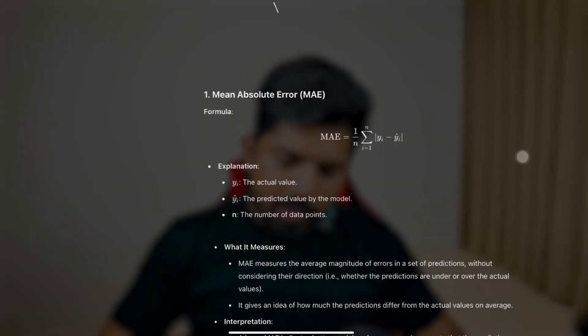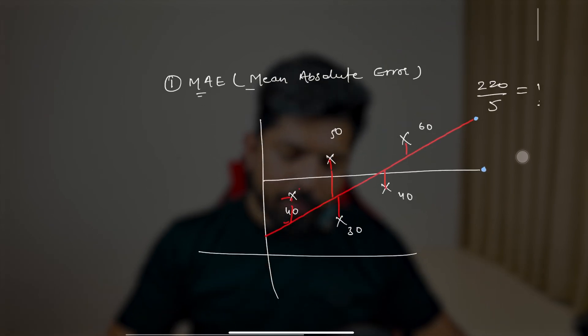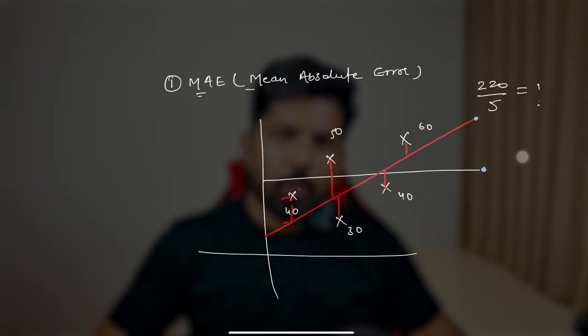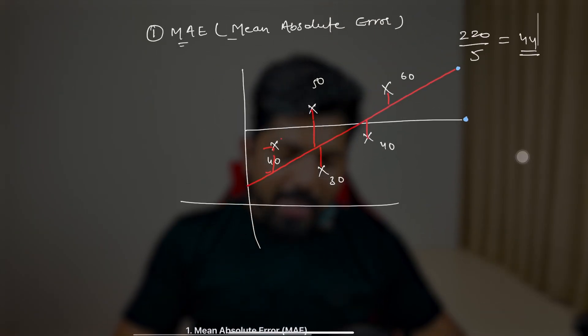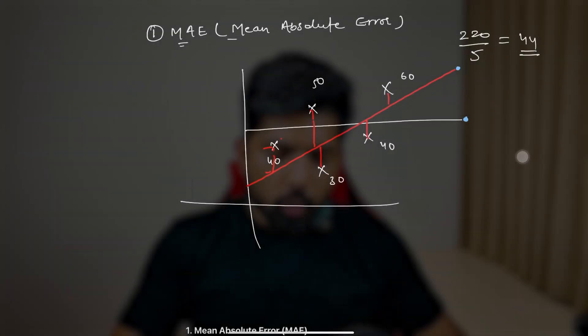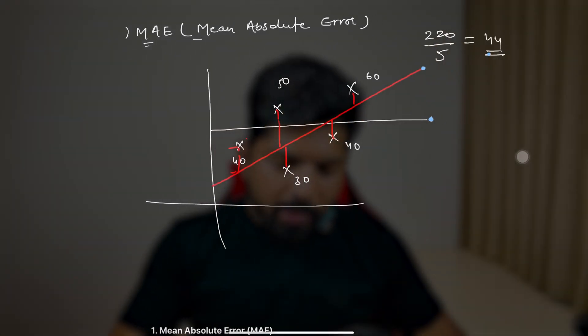MAE measures the average magnitude of errors in a set of predictions without considering their directions — values can be above or below the line and it ignores those directions. It gives an idea of how much predictions differ from actual values on average, comparing the regression model to the average value model. We always want to minimize this value; a lower MAE means a better model.